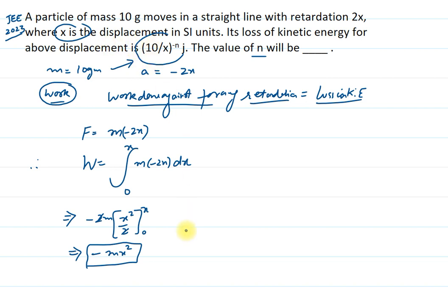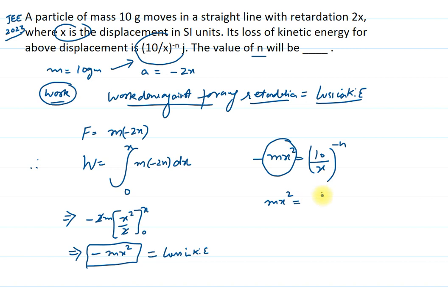So -mx² is the work done against the force of retardation from 0 to x displacement, and this is basically equal to the loss in kinetic energy. The loss in kinetic energy is also given to us, so we equate: -mx² = 10 upon x raised to power -n. Taking the absolute value, we write mx² = 10 upon x raised to power -n. The value of mass is 10 grams, which is 10 × 10⁻³ kg in SI units.